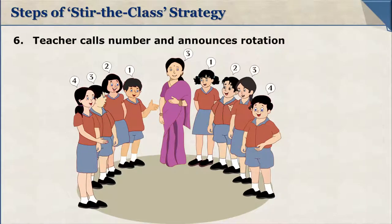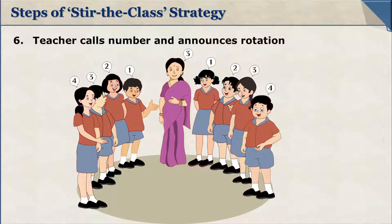Now the teacher announces a number randomly and calls for Stir the Class. The student with the announced number joins the adjacent group. For instance, if the teacher calls out number 3, then the student with number 3 will step out and move to the adjacent group.